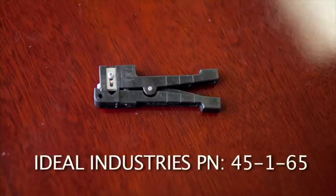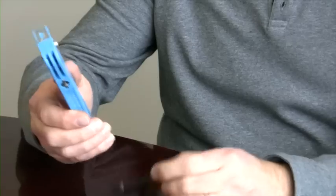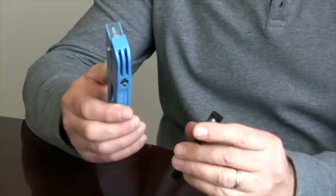The smaller one is Ideal Industries part number 45-165. The larger one is 45-164. As you can see, they're basically identical other than size.